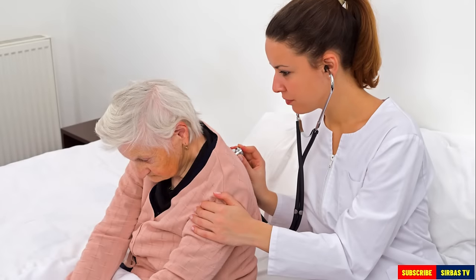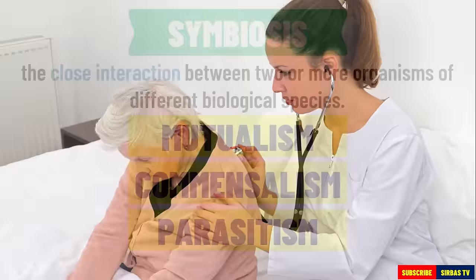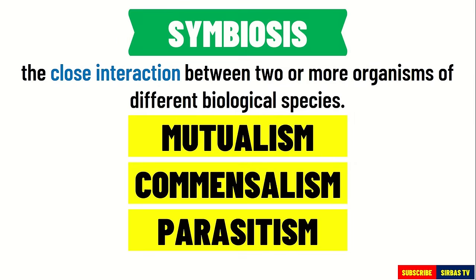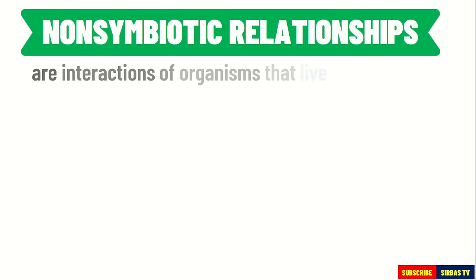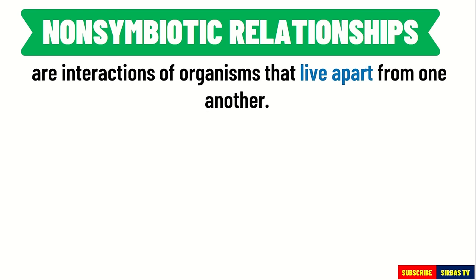Aside from symbiotic relationships, other relationships in our ecosystem also exist. These are called non-symbiotic relationships — interactions of organisms that live apart from one another.